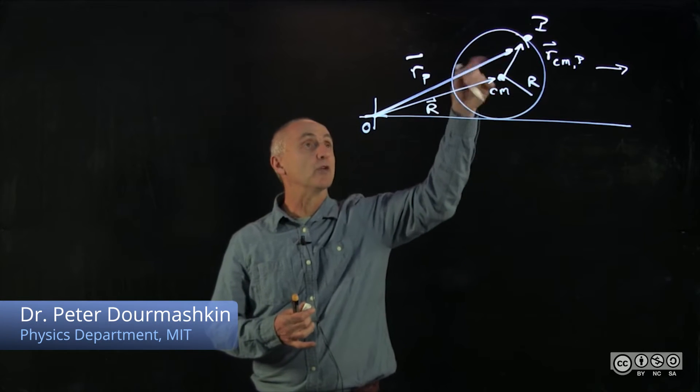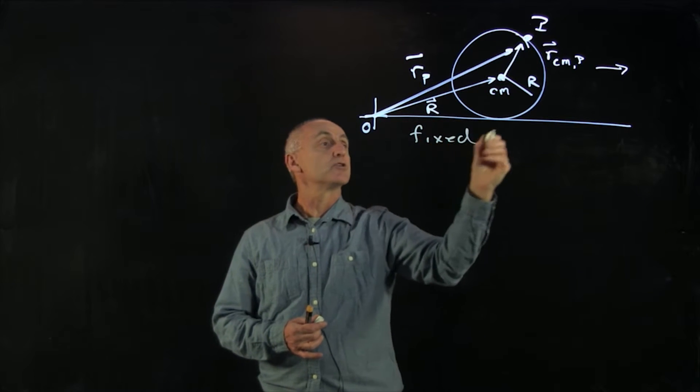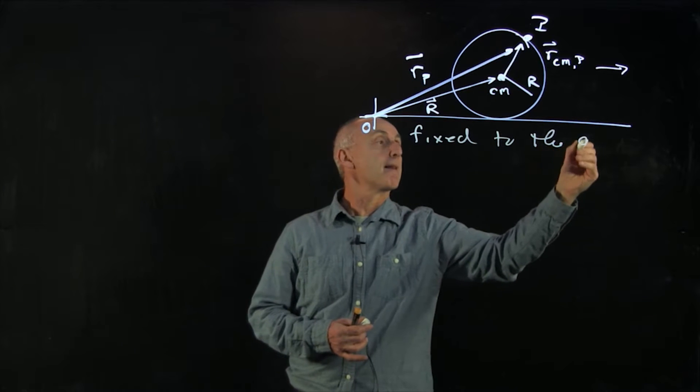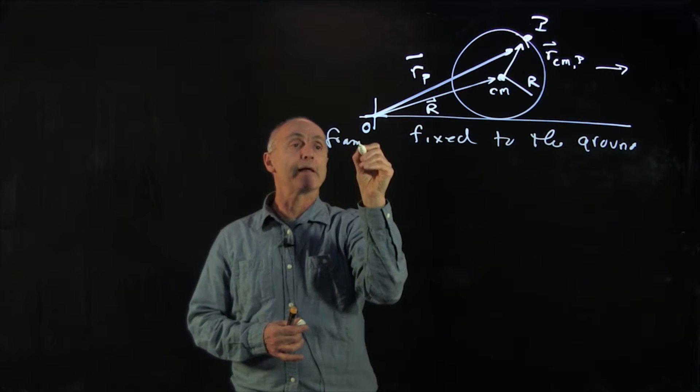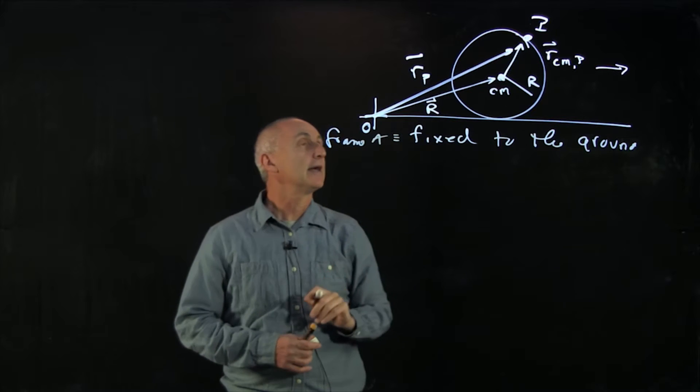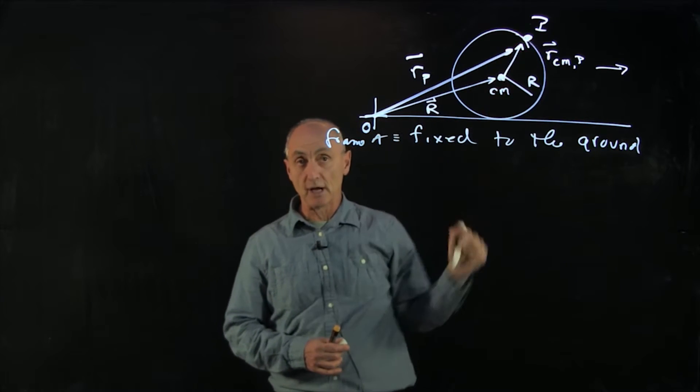When we discussed the rolling of the wheel, we chose a reference frame fixed to the ground. So that was what we called frame A. And in that reference frame, the motion of the point P on the rim was quite complicated.